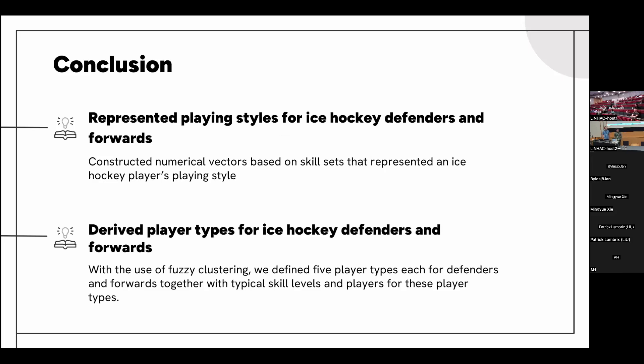I thought it was a great talk. One thing I was curious about is the distribution of player types among one team — do teams typically have a varied number of D1 to D5 and F1 to F5 players? And have you considered looking into that? That's very interesting. We have not looked into that yet, but that's one of the future work things we would want to explore.